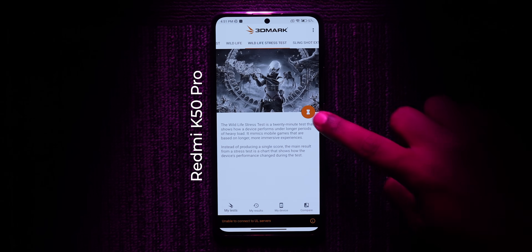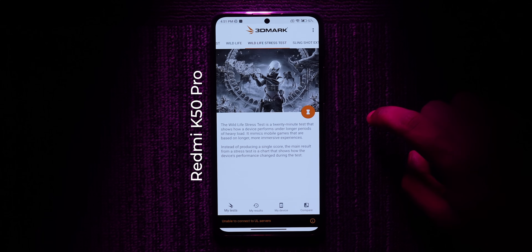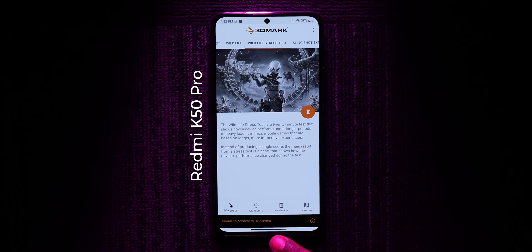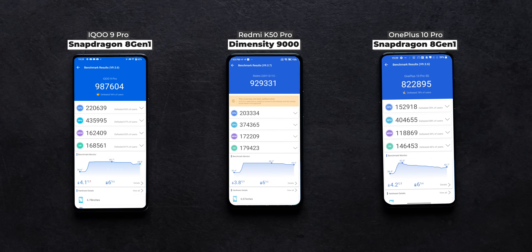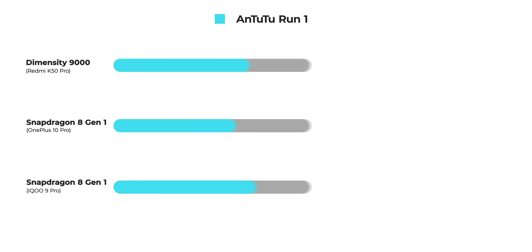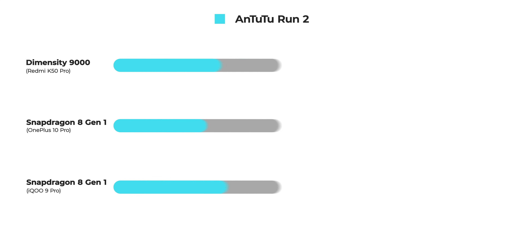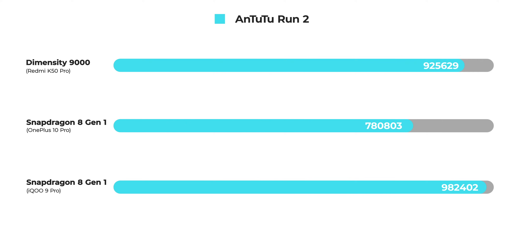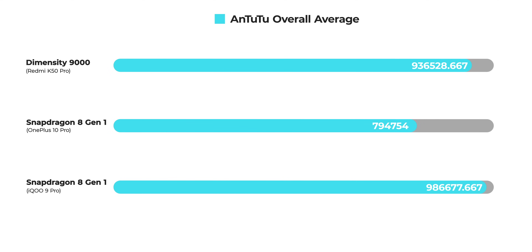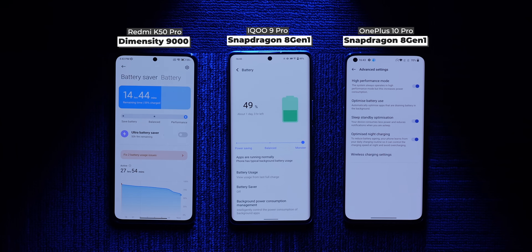First things first — unfortunately, 3DMark failed to run on the Redmi K50 Pro, one of the best tests for stressing out the GPU. Since I had very little time with the Redmi K50 Pro, I decided to run AnTuTu thrice instead, back to back. What's interesting is that the Snapdragon 8 Gen 1 inside the iQoo 9 Pro had the best scores and the best final average. In fact, in the final run it actually scored higher than the first two runs. The Redmi K50 Pro came in second, and the OnePlus 10 Pro with Snapdragon 8 Gen 1 throttles a lot — and this is despite all these phones running in performance mode.